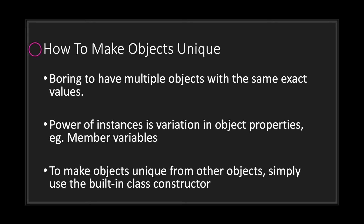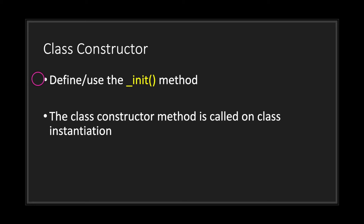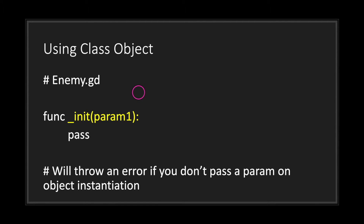It's pretty boring to have multiple objects with the same exact values. The power of instance objects is the variation you can have in object properties to make objects unique from one another. Simply use the built-in class constructor to do that — use the _init method for short. When you use this method inside your class, the constructor is called when the class is instantiated.